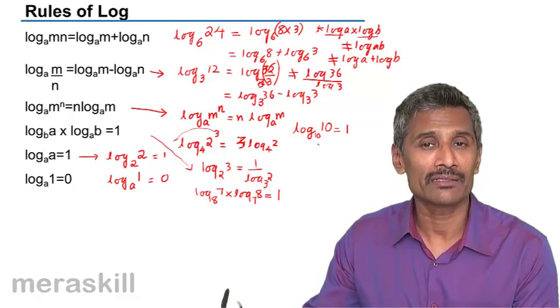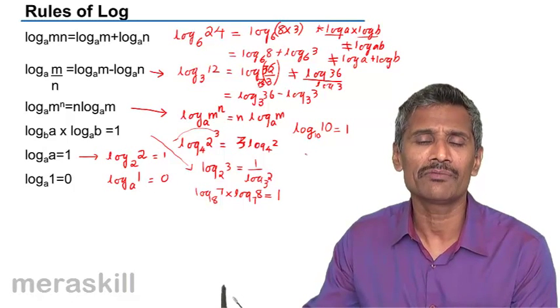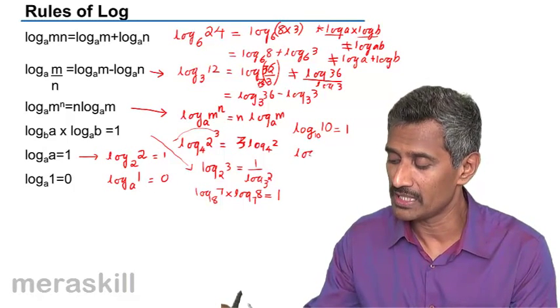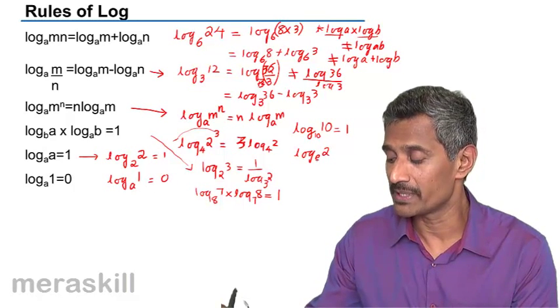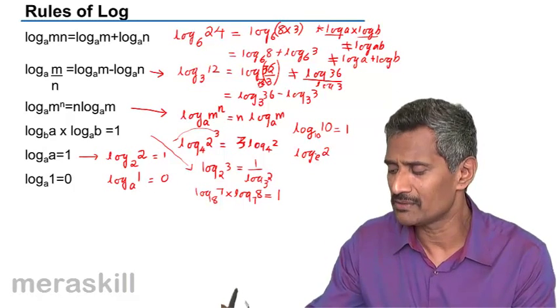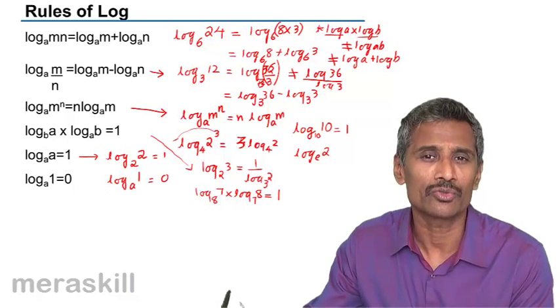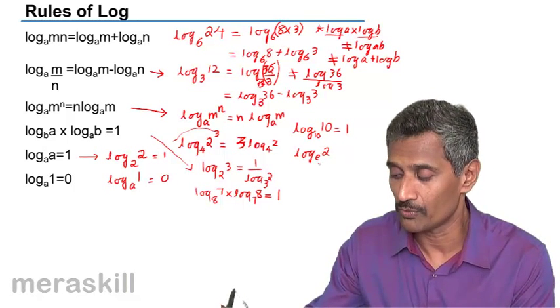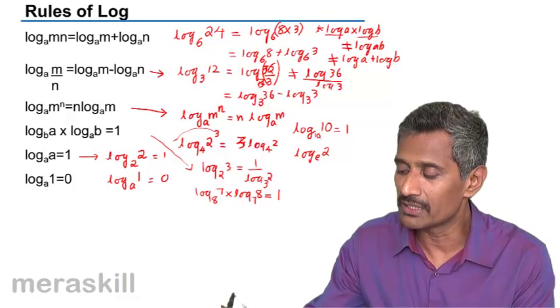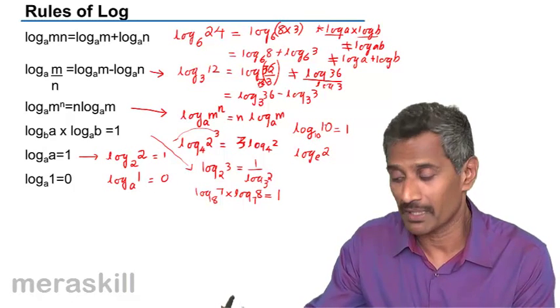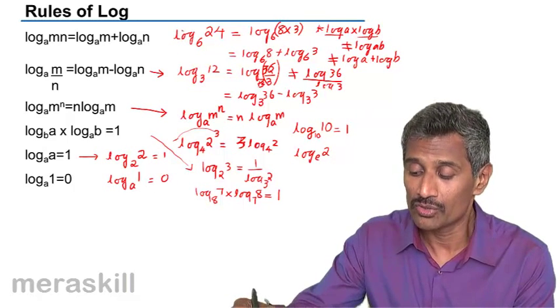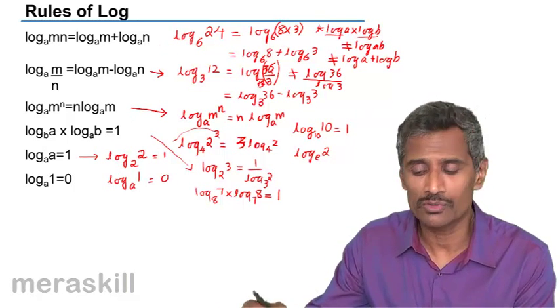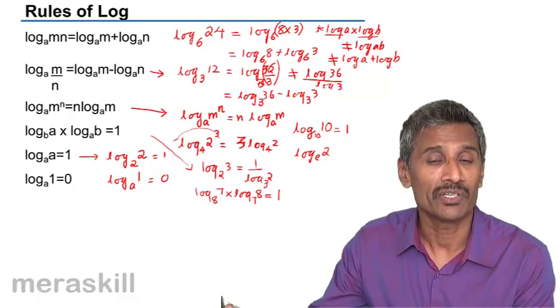This is called the common logarithm. There is another concept of logarithm where the base is a number called E. Log to the base E is called natural logarithm where E is an irrational number 2.7182 and so forth. In case the base is not mentioned, we can take the base as 10 since it is dealing with common logarithms. These are some very important rules which we shall apply again and again.